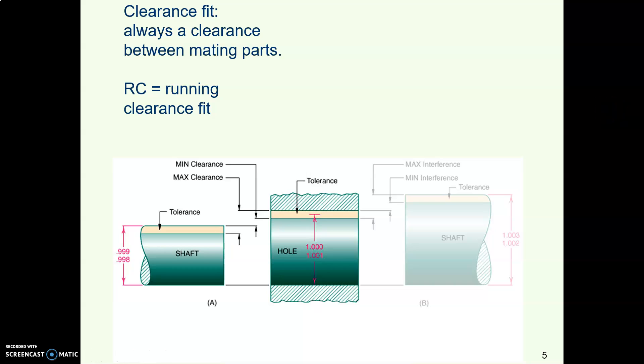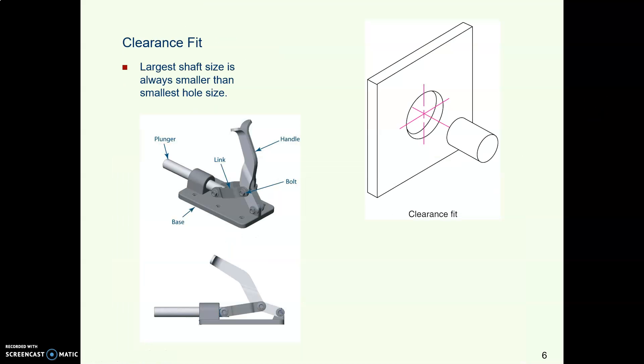A clearance fit is the one where you always have clearance. So you always have the shaft, for example, will always slide through the hole or the rail will always slide through the slot. ANSI calls that a running clearance fit, the RC for clearance. So anytime you have a shaft sliding through a hole or anything like that where you want the thing always to be able to move, you've got a clearance fit. So the hole is always bigger than the shaft.